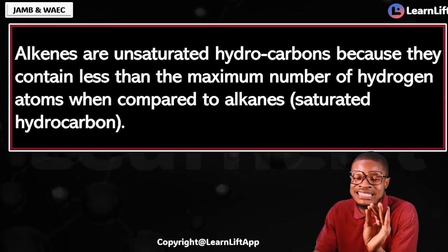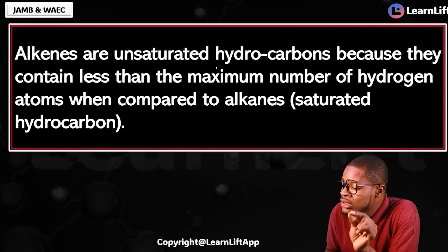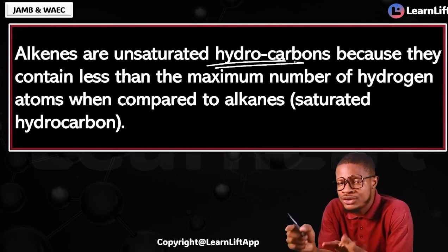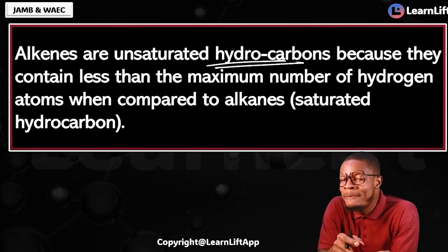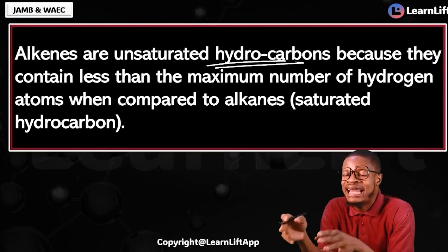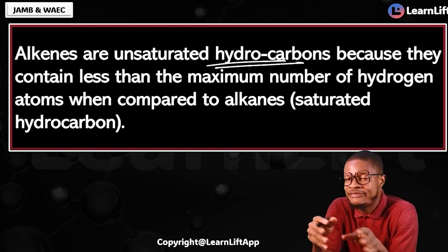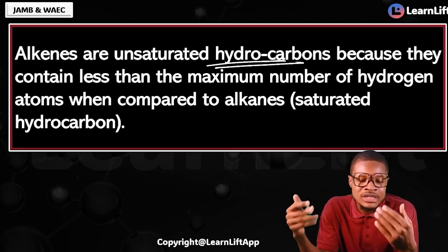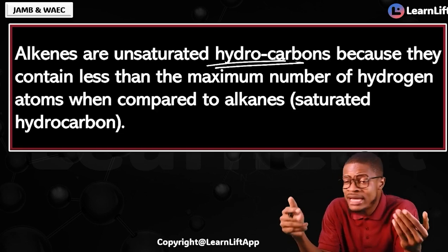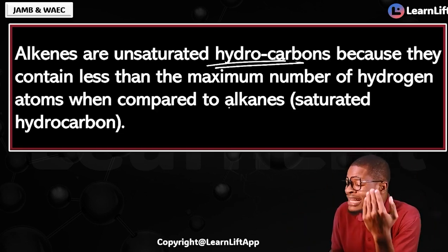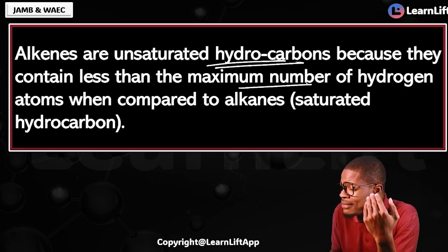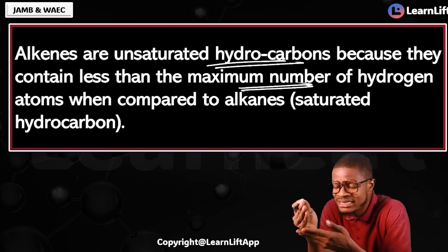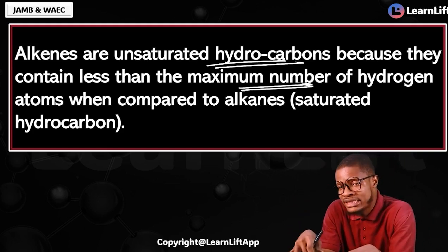Alkanes are unsaturated hydrocarbons. Are they aromatic or aliphatic? Of course, they are aliphatic hydrocarbons. So we can say alkanes are unsaturated aliphatic hydrocarbons. Why are they so? Because they contain less than the maximum number of hydrogen atoms that they should actually contain.